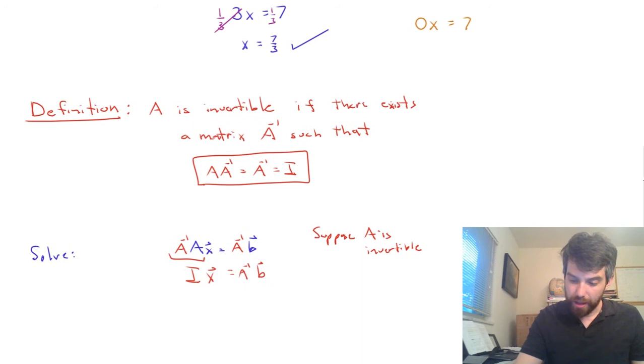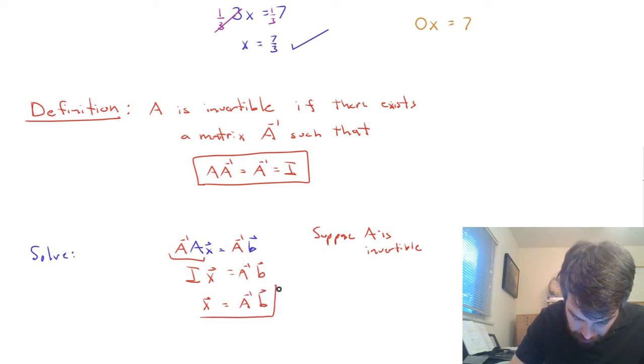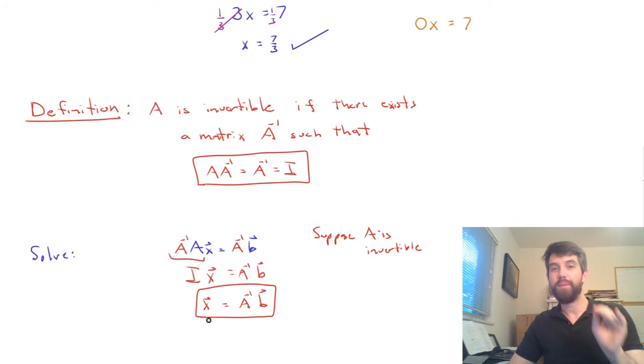And then, the identity matrix is the one that doesn't transform anything, right? I times X is just going to be the exact same thing as X. And now I have a solution to AX equal to B. My vector X is just A inverse times B.